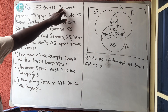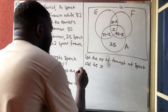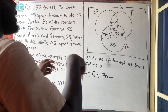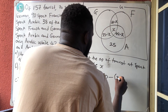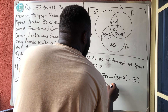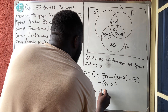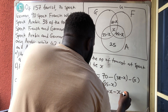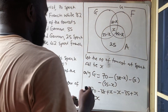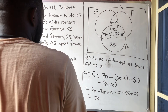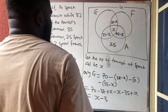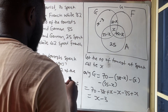They said 70 speak German without 'only', so only German equals 70 minus everything that entered German: 70 minus (38 minus x) minus (35 minus x). Opening the brackets: 70 minus 38 plus x minus 35 plus x. That gives x minus 3, so only German is x minus 3.